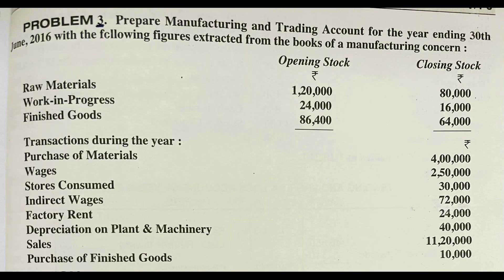Let us see the question first. Prepare manufacturing and trading account for the year ending 30th June 2016 with the following figures extracted from the books of a manufacturing concern. Raw materials: opening balance 1,20,000, closing balance 80,000 rupees. Work in progress: opening 24,000, closing 60,000. Finished goods: opening 86,400, closing 64,000.